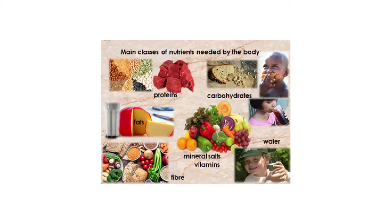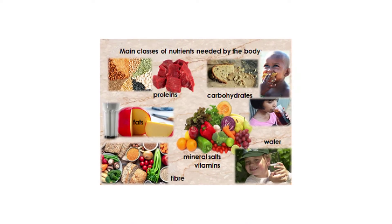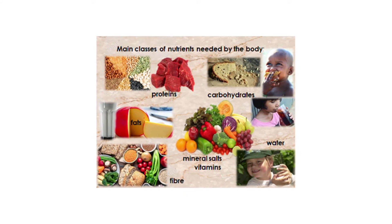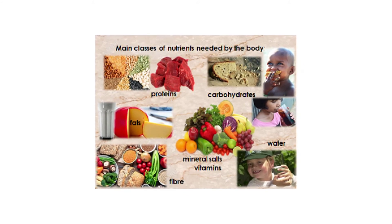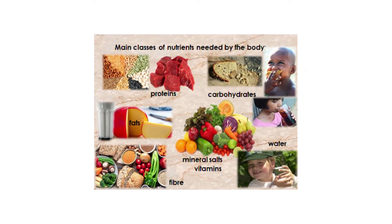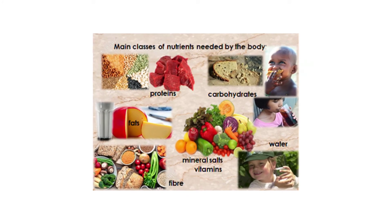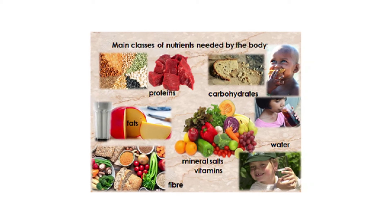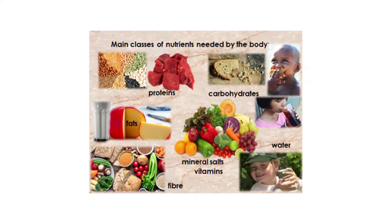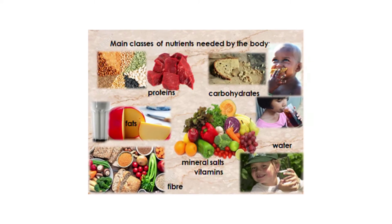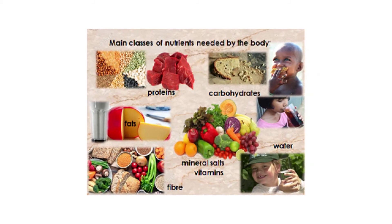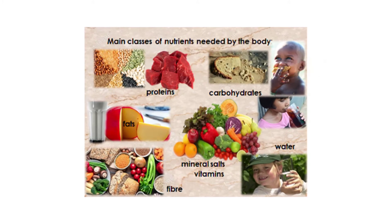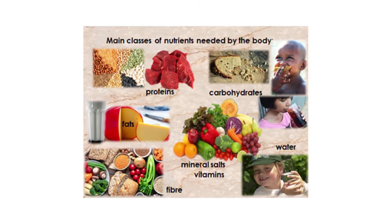There are seven main classes of nutrients that the body needs. These are carbohydrates, proteins, fats, vitamins, mineral salts, fiber, and water.